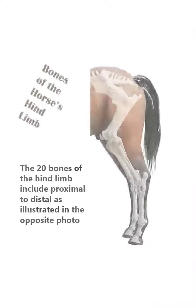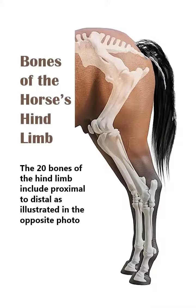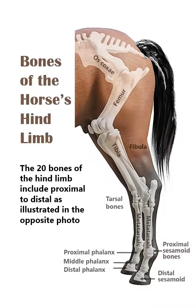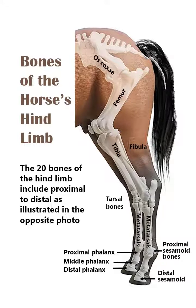The bones of the hind limb include, proximal to distal: os coxae, femur, tibia, fibula, tarsal bones, metatarsal bones, proximal phalanx, proximal sesamoid, middle phalanx, distal phalanx, and distal sesamoid.